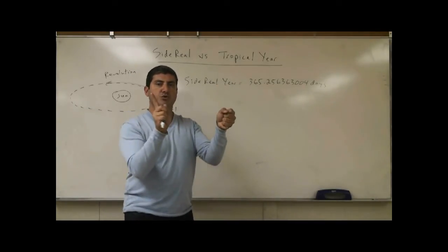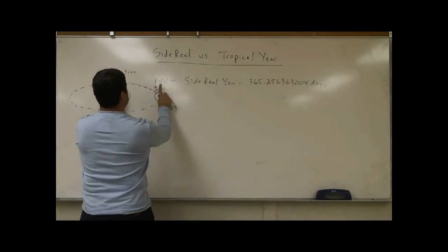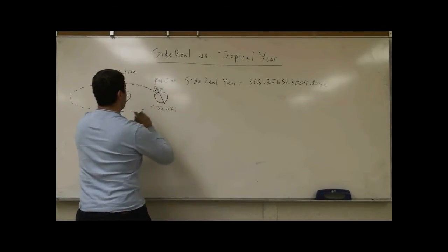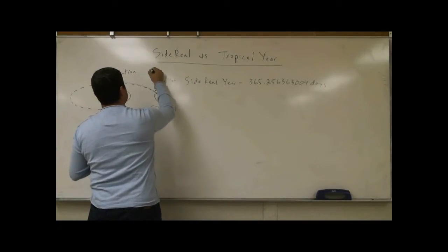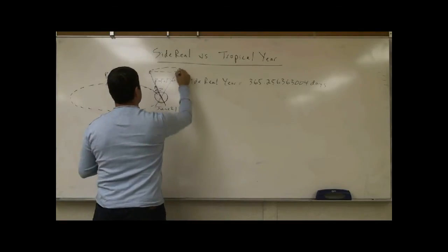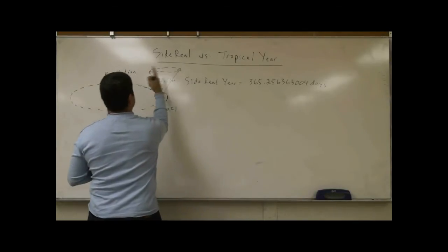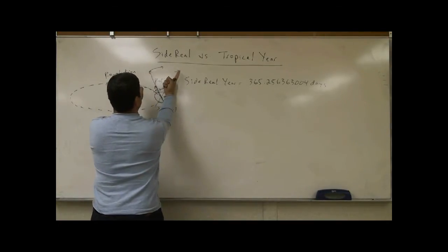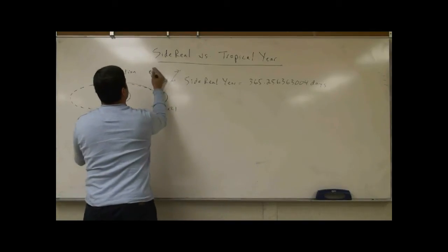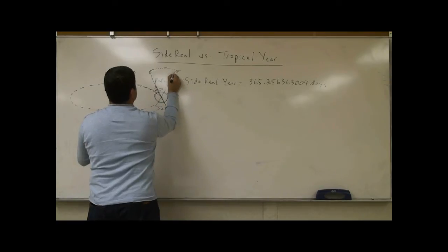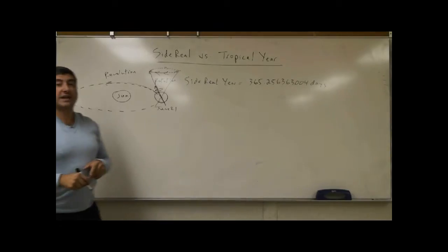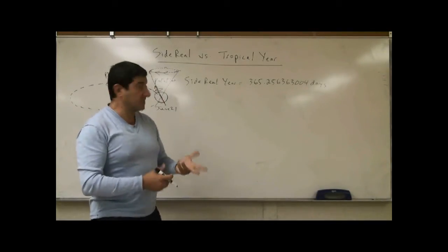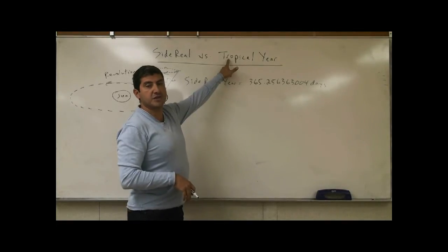The third thing the Earth is doing is precessing. The axis of the Earth is making a cone shape — precession doesn't mean the angle of the tilt is changing, it just traces a cone. The direction of the precession goes into the board and then out of the board. The precession rate of the Earth is very slow, but it does affect the seasons, and it's because of the precession rate that we have something known as the tropical year.